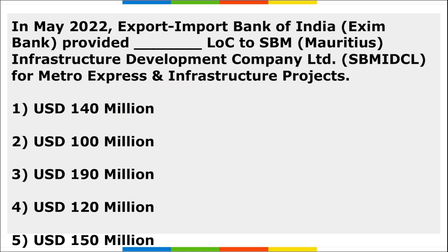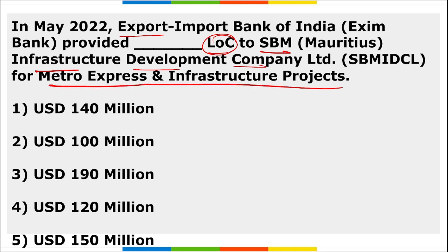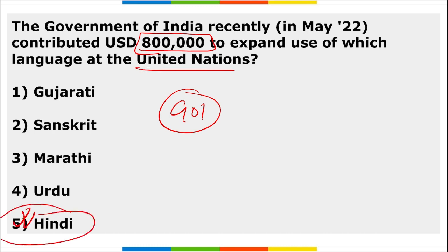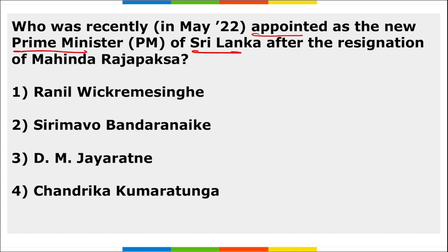Exim Bank provided a $190 million Line of Credit to SBM Infrastructure Development Company of Mauritius for metro express and infrastructure projects. The Government of India contributed $800,000 to extend the use of Hindi language at the United Nations.